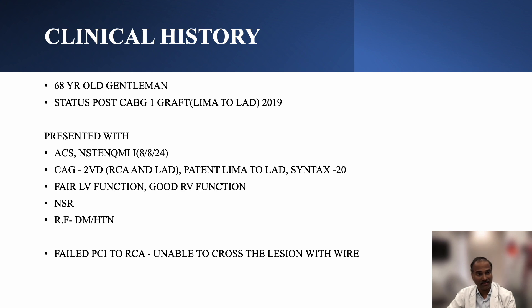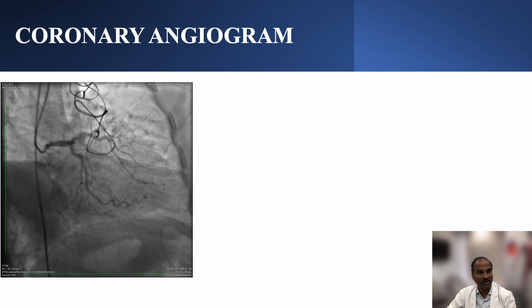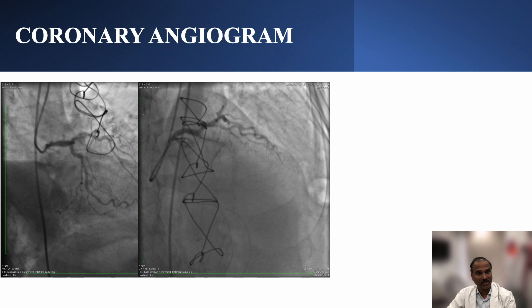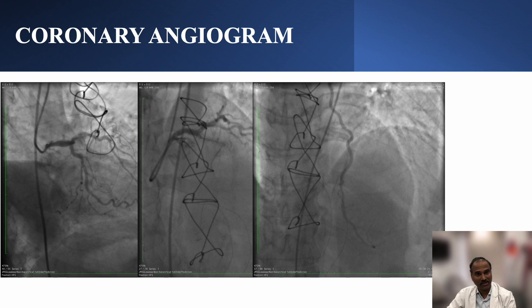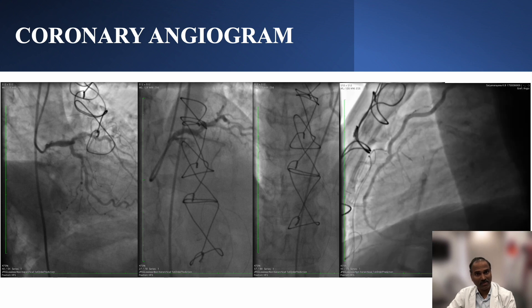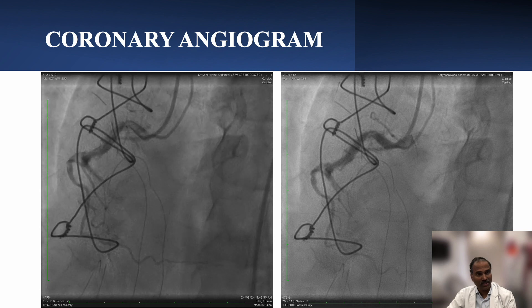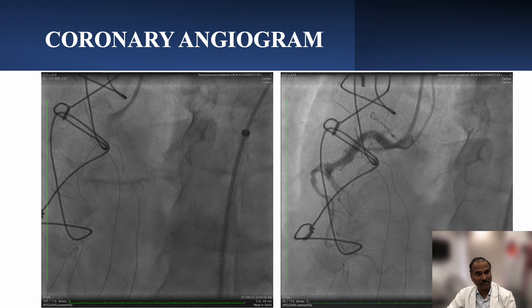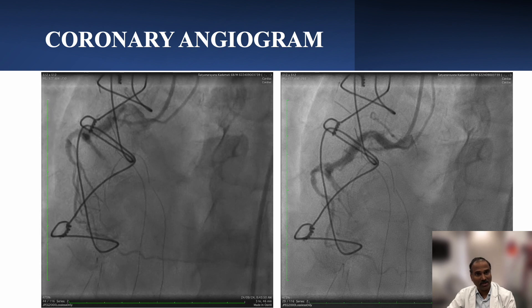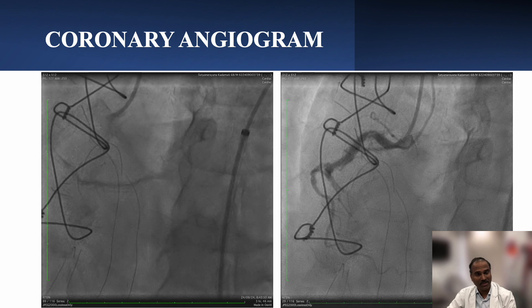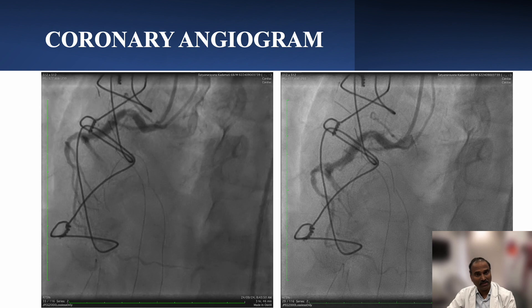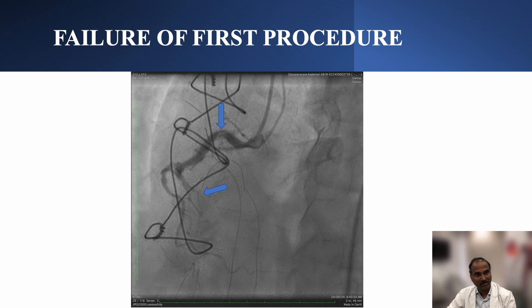PCI was attempted outside but failed as the wire could not cross the lesion. The left system showed LMCA disease with LCX mildly diseased, LAD was totally occluded but LIMA to LAD was quite patent with a good distal anastomosis. The right coronary artery showed a loopy RCA with near-total occlusion, TIMI-1 flow, and there are three bends within the RCA. We can also see a calcium nodule sitting in the proximal RCA.